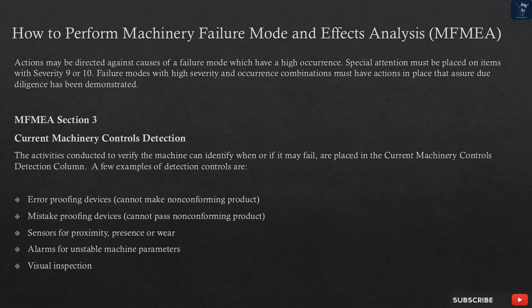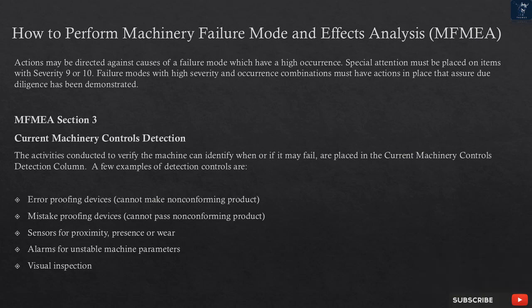MFMEA Section 3 — Current Machinery Controls: Detection. The activities conducted to verify the machine can identify when or if it may fail are placed in the current machinery controls detection column. A few examples of detection controls are: error proofing devices that cannot make non-conforming product; mistake proofing devices that cannot pass non-conforming product; sensors for proximity, presence, or wear; alarms for unstable machine parameters; and visual inspection.